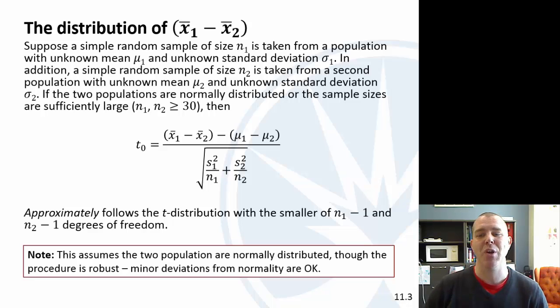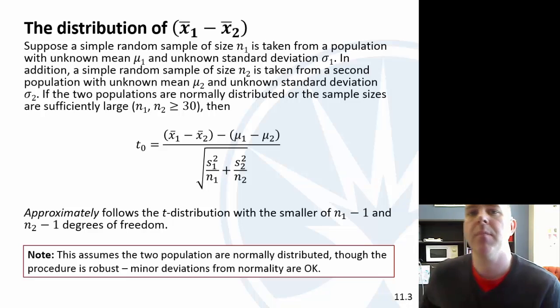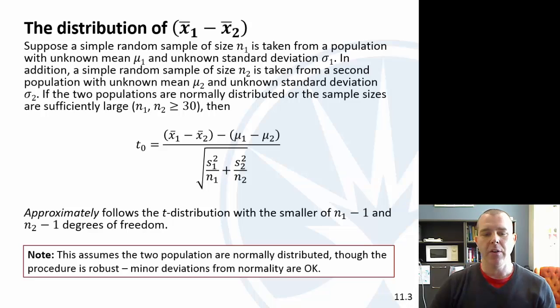StatCrunch will calculate this automatically, but you want to be as liberal as possible. You want the smallest degrees of freedom, which makes that t wider. What you do is look at the smaller sample size and use that to calculate your degrees of freedom. This assumes the two populations are normally distributed, though it is a pretty robust procedure, meaning it can handle a little bit of deviation from that. If you do that QQ plot and it's not perfectly linear, that normal quantile plot, that's okay. If there's an outlier that's not crazy, one outlier out of a sample of 50 or something isn't going to blow this up. You can still follow this test because this is approximately following the t-distribution.